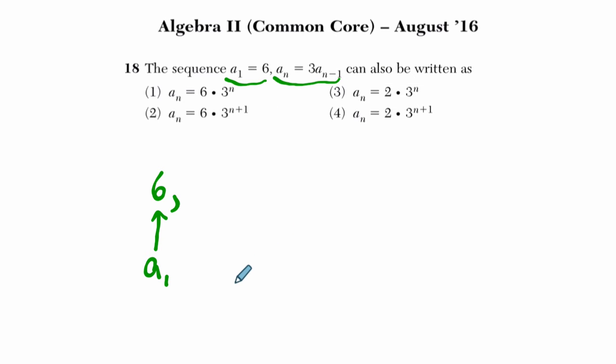So if I'm looking at a 2, a sub 2, it's got to be 3 times, well, 2 minus 1 is 1, the first term. So it's 3 times 6, or 18. And I'm going to write one more term in there. a sub 3 would be 3 times a sub 2. So 3 times 18, which is 54, and so on and so forth.